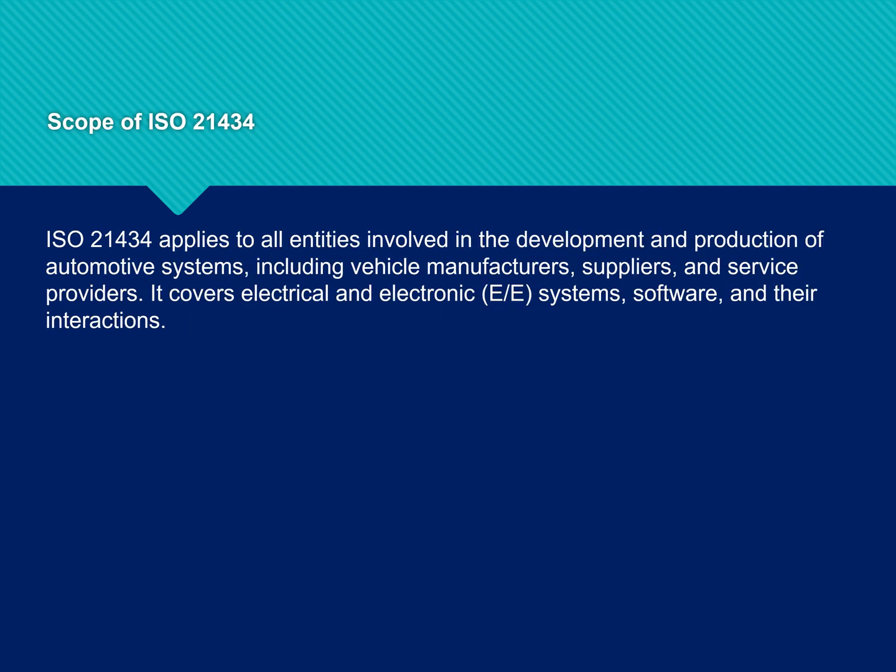ISO 21434 applies to all entities involved in the development and production of automotive systems, including vehicle manufacturers, suppliers and service providers. It covers electrical and electronic systems, software and their interactions. Essentially, if you're working on any component of a vehicle that involves electronics or software, ISO 21434 is relevant to you.